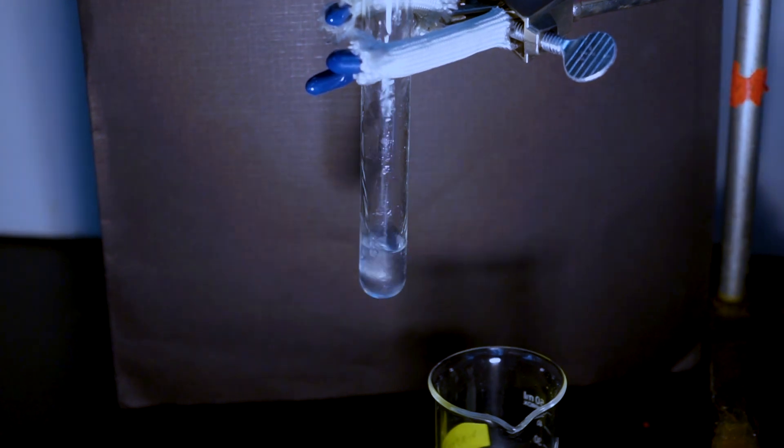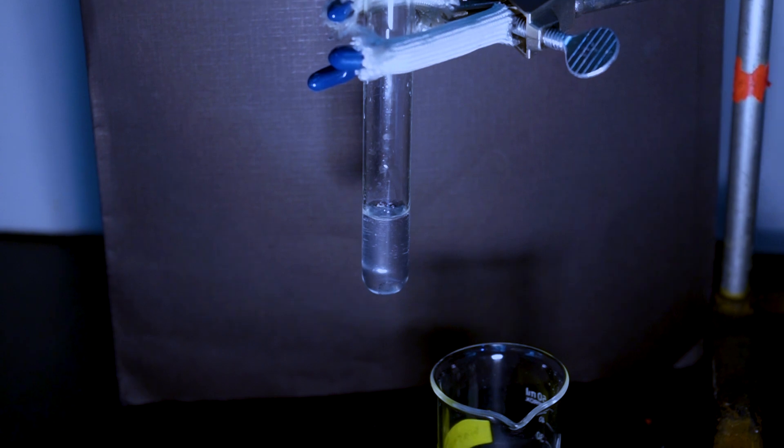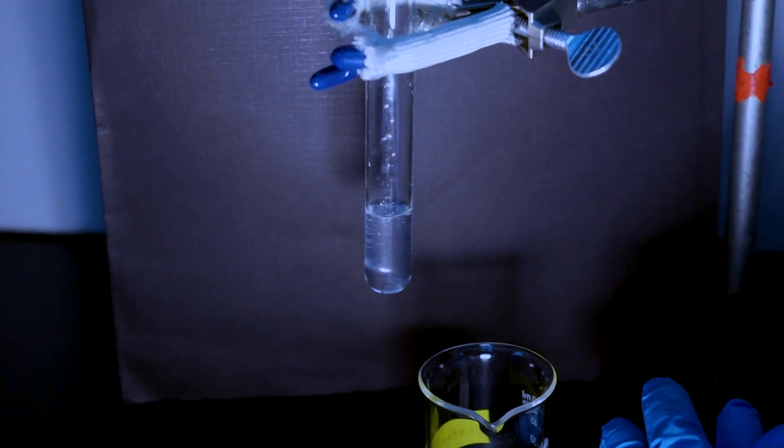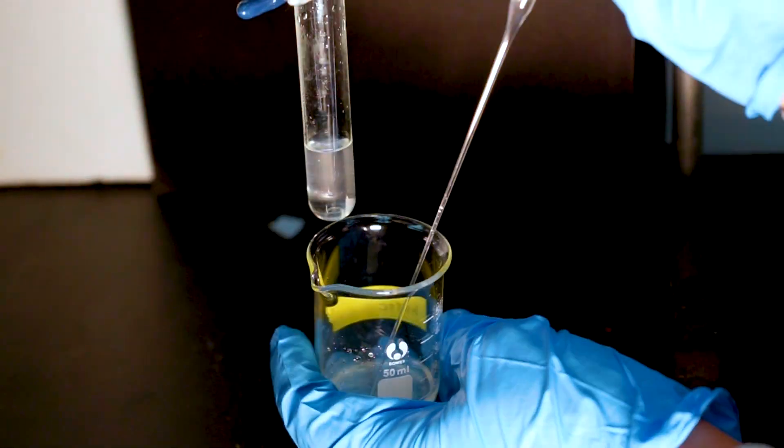The second wash is with two milliliters of saturated sodium bicarbonate. Again, mix as needed and allow the layers to separate. Discard the top layer.